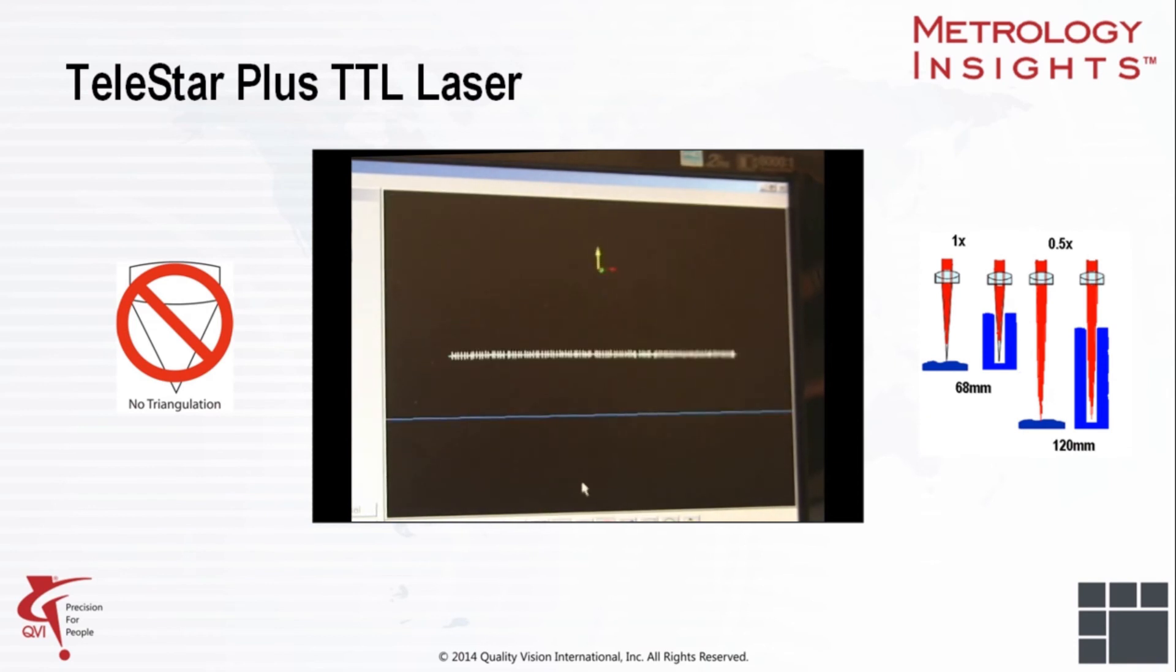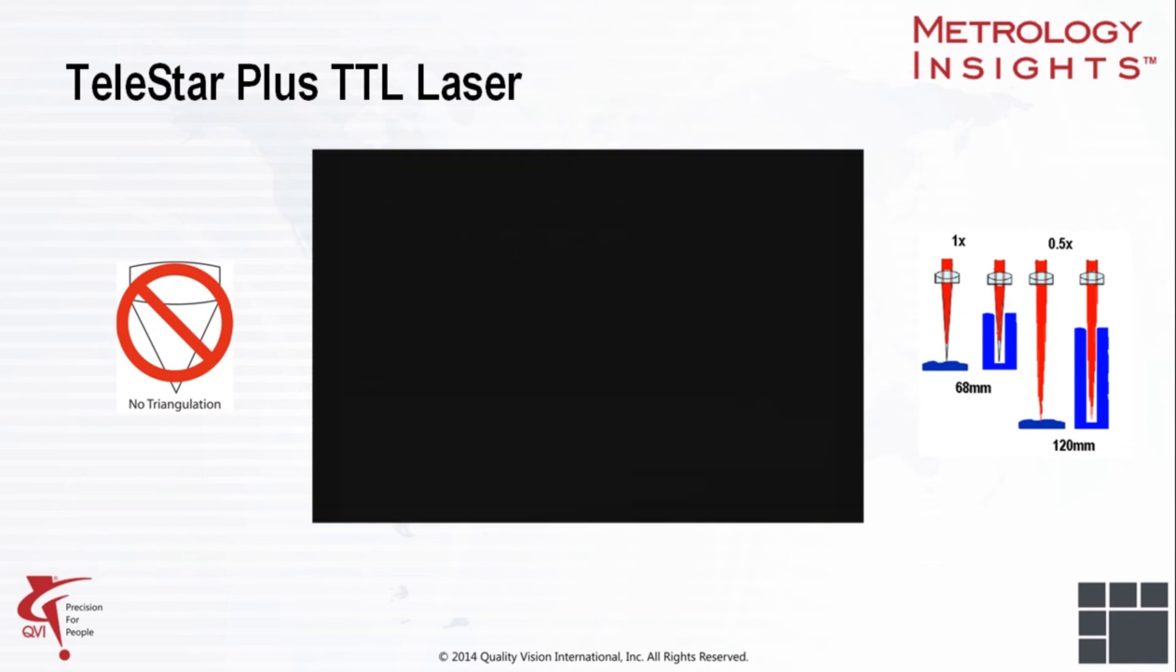The Telestar Plus has a very long working distance and narrow return angle allowing measurement of high aspect ratio recessed surfaces as much as 200 millimeters deep.